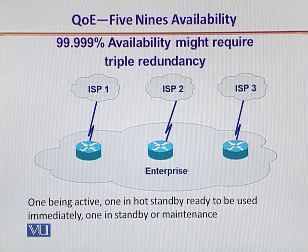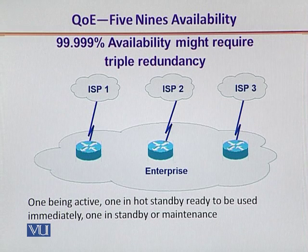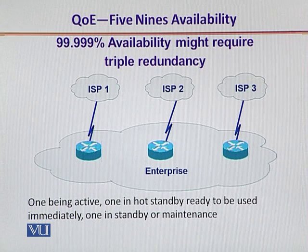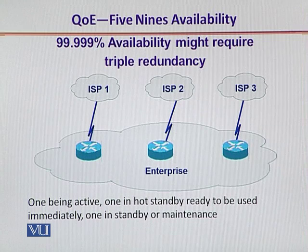As an example from the internet world, let's look at a triple router configuration which provides 5-9s availability. An enterprise that cannot afford more than 5 minutes of downtime will deploy 3 routers, each with its own independent ISP. If one router goes down, the secondary one takes over. The configuration is such that one router is in active state, another in hot standby, and the third in maintenance. So if there is a software change, it is done on the maintenance router, which is then swapped with the hot standby router while the active router continues working.